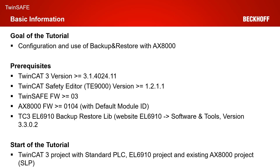The goal of today's tutorial is to configure and use the backup and restore mode with the AX8000. We have an EL6910 and an AX8000 and both have a safety project. We want to configure the backup and restore mode so that we can change the EL6910 and/or the AX8000, and the safety project is restored by our backup and restore mode without anybody using TwinCAT 3.